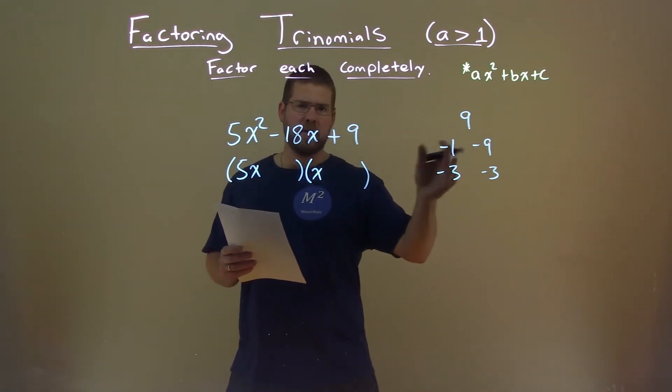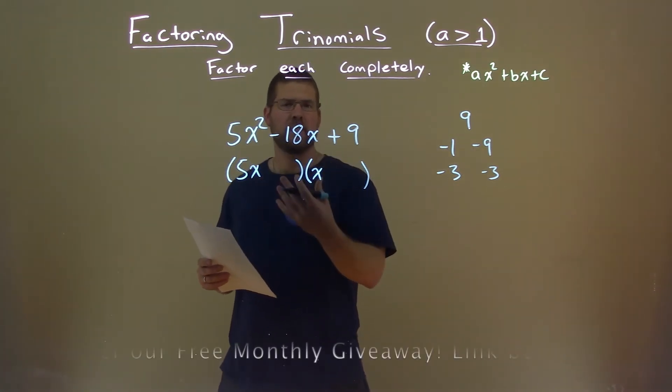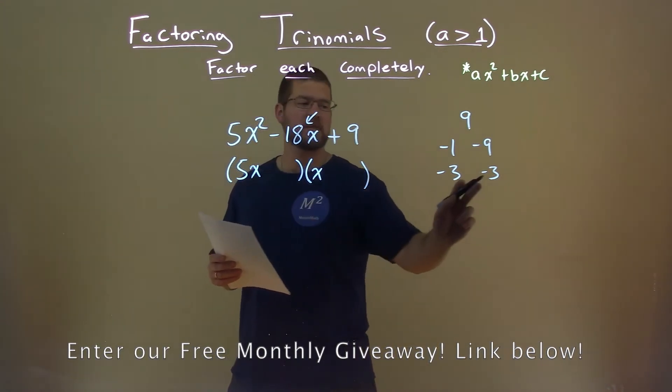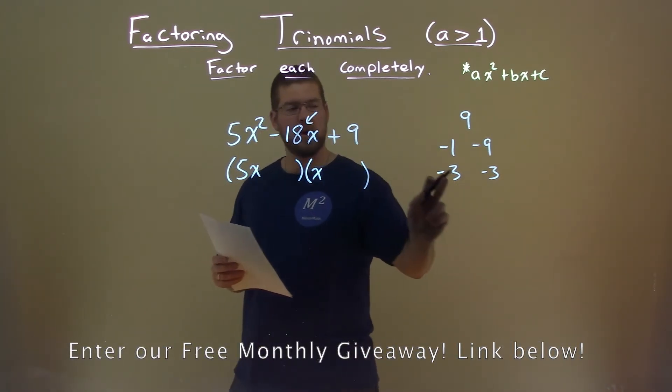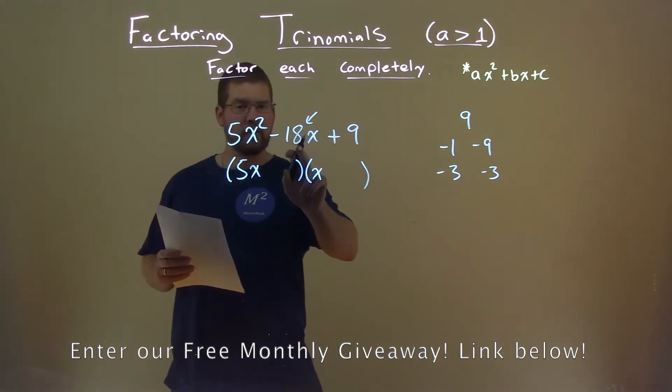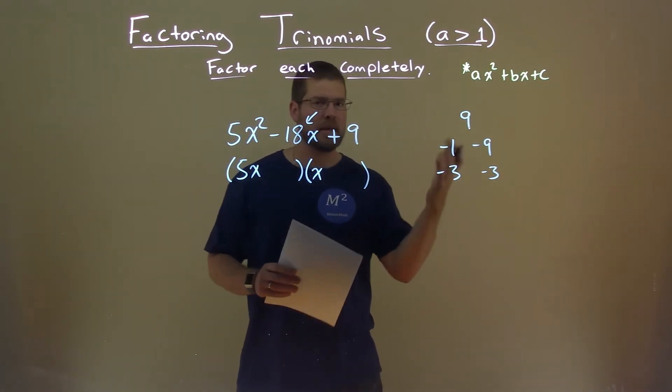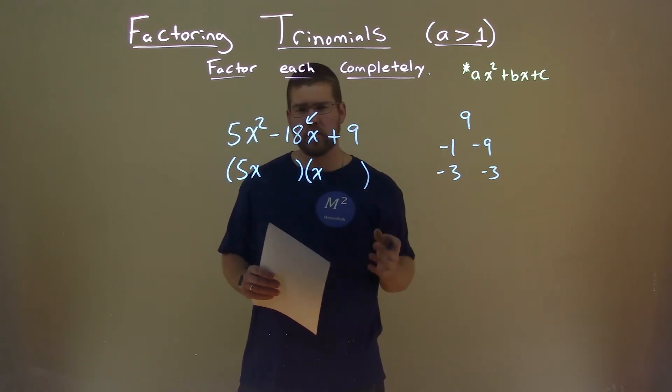Well, again, order won't matter here, but I want to ask myself this question. What two numbers—5 times which number plus 1 times the other number gets me to my b value, which is negative 18? And I try to make my first best guess here. I try to find a value that's close.